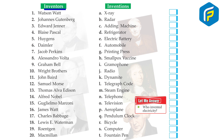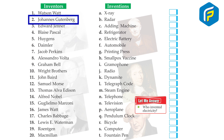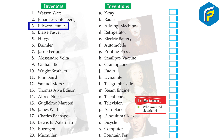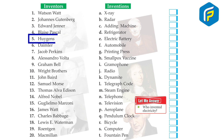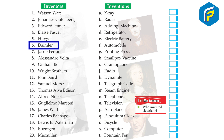Inventors: 1. Watson Watt – Radar. 2. Jonas Gutenberg – Printing Press. 3. Edward Jenner – Smallpox Vaccine. 4. Blaise Pascal – Adding Machine. 5. Huygens – Pendulum Clock. 6. Daimler – Automobile.